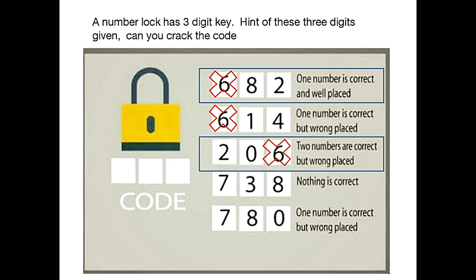First condition says one number is correct and well placed and we know 2 is the correct number. Woohoo! We got our first digit 2 which will be placed at the third position of the code. First condition says that only one number is correct, that means 8 is not the right number. Let's eliminate 8 from all the conditions.